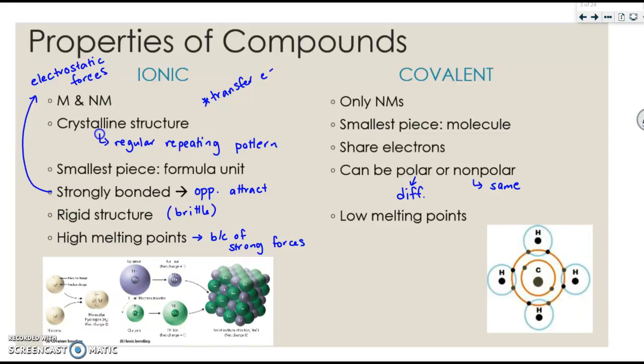A good example of an ionic compound would be something like NaCl. A good example of a covalent compound would be something like wax or sugar, or even something like methane. So you have an actual chemical formula.